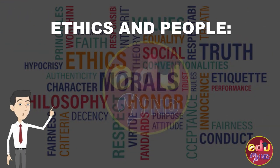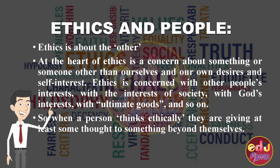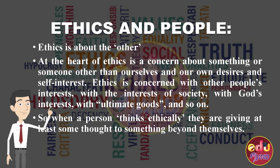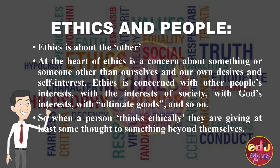Ethics and people — it means the role of a person to be an ethical person. So being an ethical person means having traits such as integrity and honesty. It means trying to do the right thing, living one's values, and showing concern for others and for society.